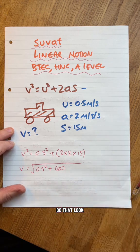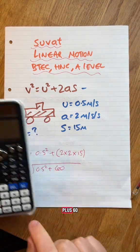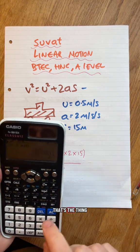So on your calculator, do that. Look, so do square root, 0.5 squared plus 60, all in one go. That's the thingy-ma-jig.